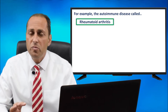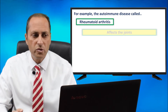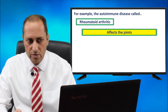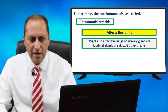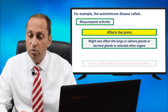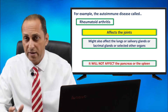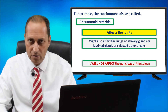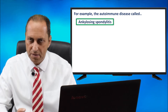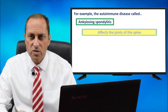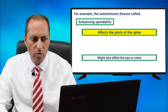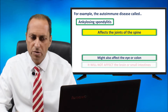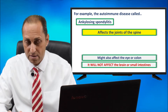For example, the autoimmune disease called rheumatoid arthritis affects the joints, and might also affect the lungs, salivary glands, or lacrimal glands or some other organs. It will not affect the pancreas or the spleen. Ankylosing spondylitis, another autoimmune rheumatic disease, affects the joints of the spine, might also affect the eye or colon, and will not affect the brain or the small intestines.